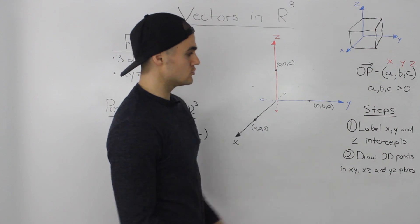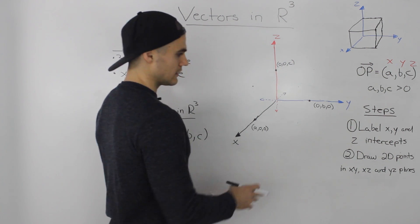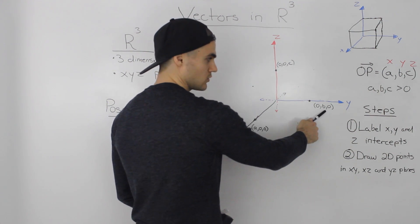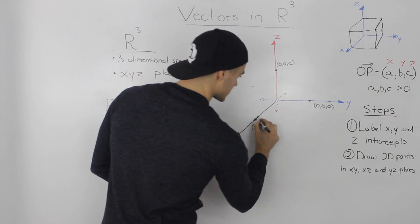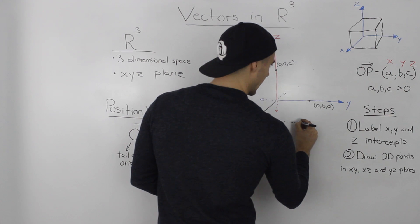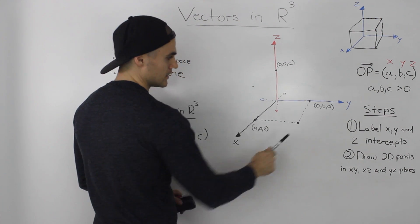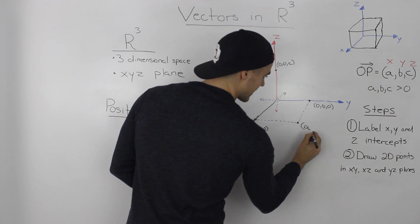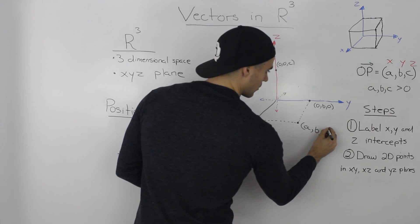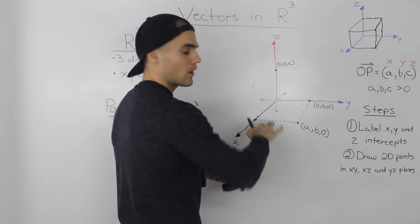The next step is to draw the two-dimensional points in the xy, xz, and yz planes. Starting with the xy plane — the floor — the x intercept is (a, 0, 0) and the y intercept is (0, b, 0). If we combine both of these points, an x value of a and a y value of b would meet right there. So the coordinate of this point is (a, b, 0), because it's on the xy plane and the z value is 0 on that plane.